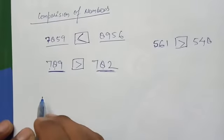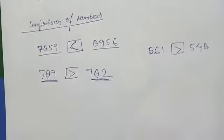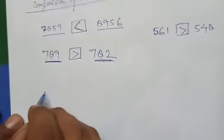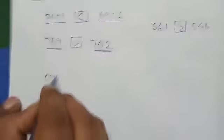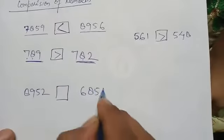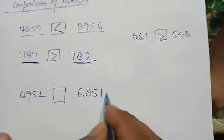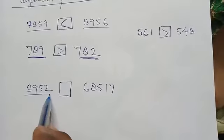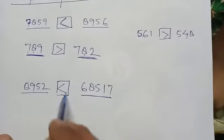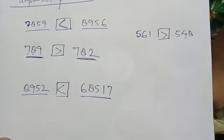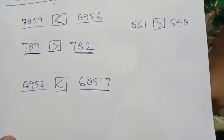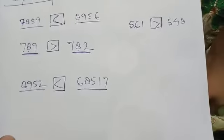The second condition: if the number of digits are not the same. For example, here is 8, 9, 5, 2 — that is 4 digits — and here is a 5-digit number. So the 5-digit number is greater. The number with more digits is always the greater number.